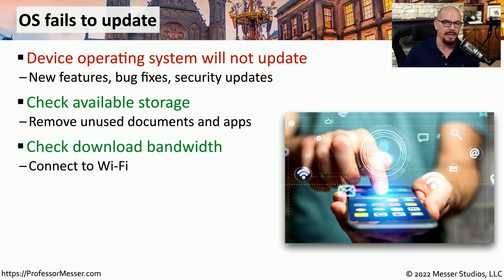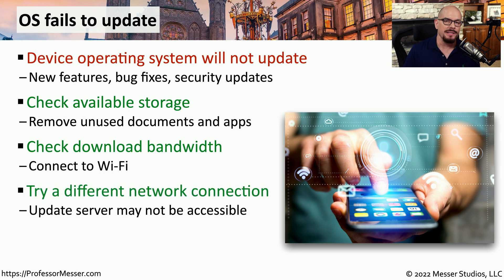These are also very large updates, so if you're not connected to Wi-Fi, this could take a very long time to download. To improve this download speed, you may want to look for an available Wi-Fi network and use the increased bandwidth to download the latest OS version. Our mobile devices are usually connecting to an update server to download the latest version of the operating system, and if many people are trying to access that server simultaneously, this process could be relatively slow. So you might want to try a different connection or a different Wi-Fi network to connect to a different update server.